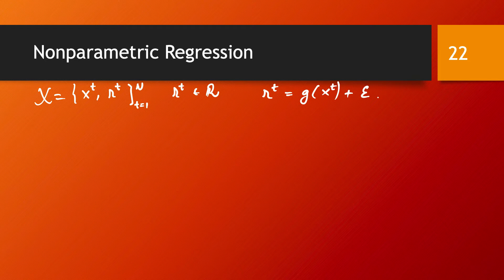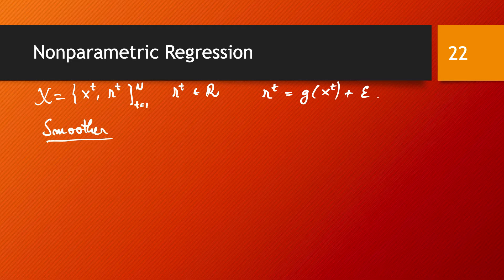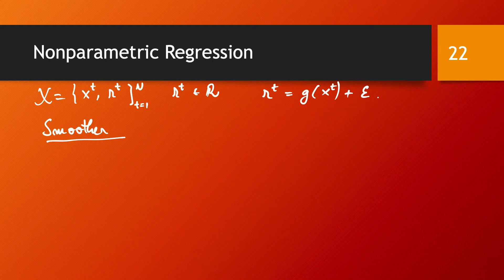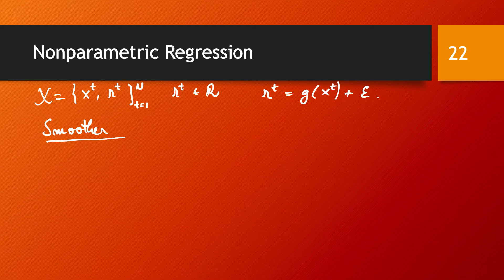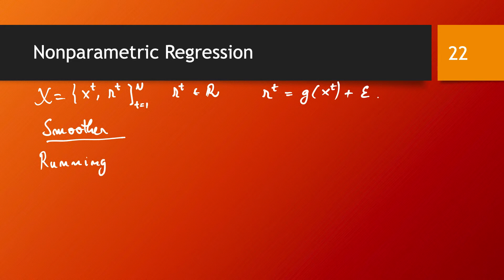So the nonparametric regression estimator is also called a smoother, and the estimate is also called a smooth. There are various methods for defining the neighborhood and estimating the value of your data point based on the values of those points in the neighborhood. I want to show you a few examples. The first example is called the running mean smoother.